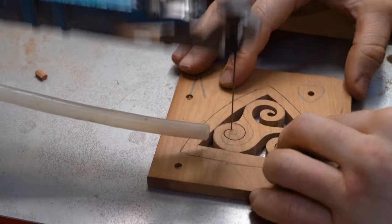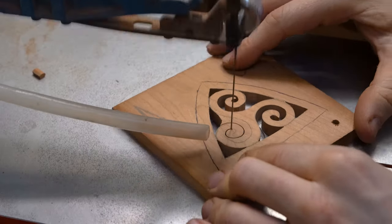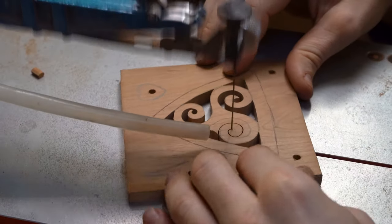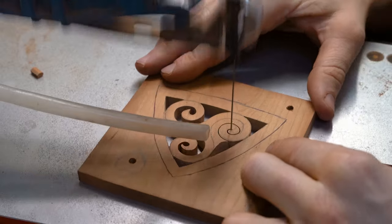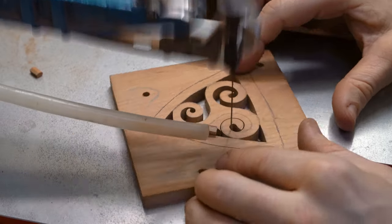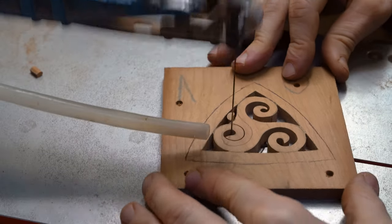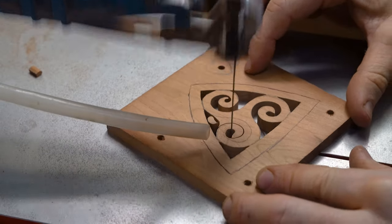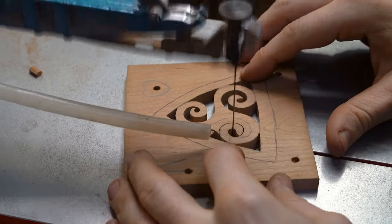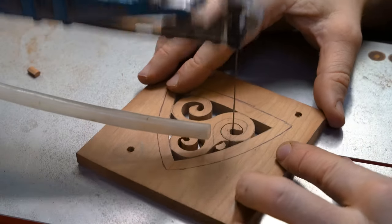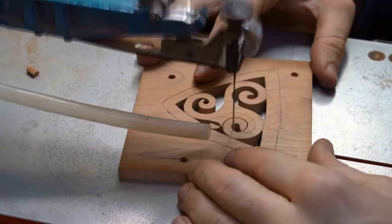You'll also see us demonstrating how you can almost feather edge. So sometimes we'll cut a little bit too far away from the line. But this isn't a huge problem because we can just go back over where we've cut and go a little bit closer to the line, just feathering it.